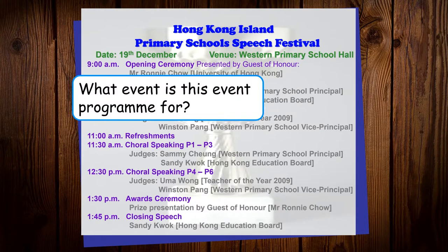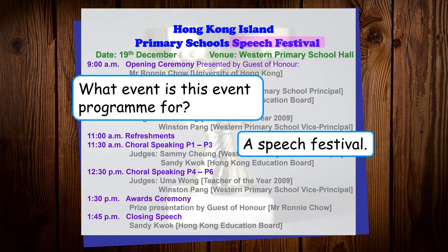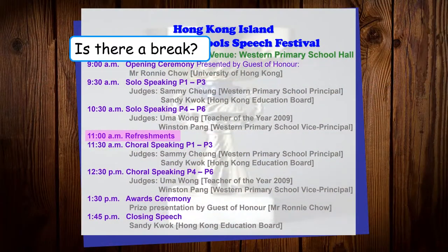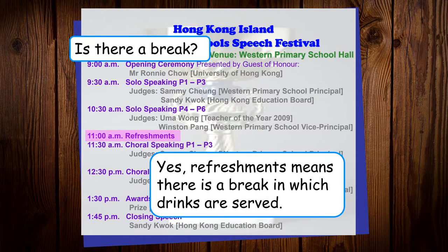First question: what event is this event program for? Let's say this is a paper — something that you get from an event. What does it tell you? Yes, that's right — a speech festival. Is there a break? At 11am there's the special word 'refreshments.' Yes, there is a break. Refreshments means there is a break in which drinks are served, sometimes food also. In short, this word means food and drinks.